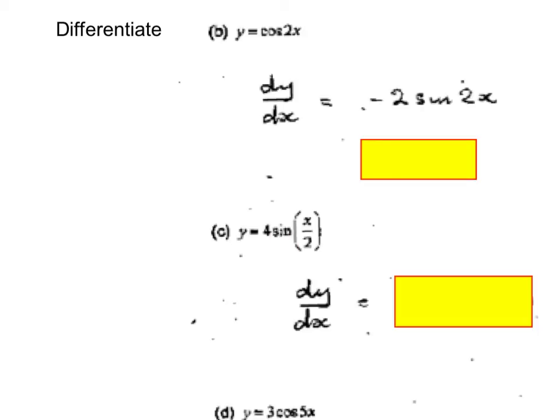And differentiating sine is cos. So your final answer would be 2 cos x over 2.